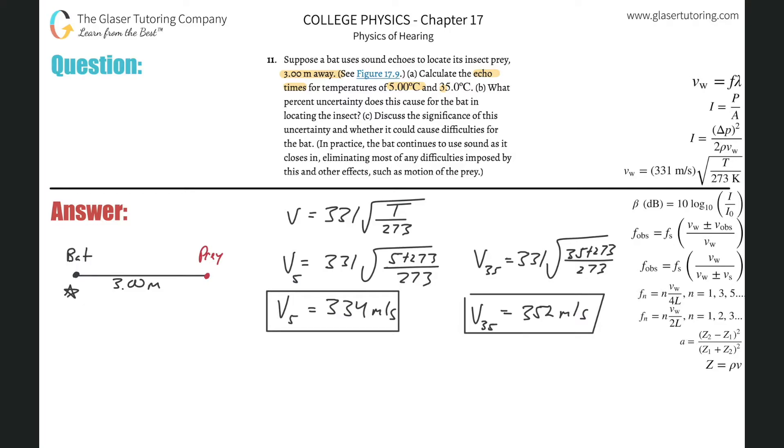So essentially what we could think about is if I want to find the time that it takes for the bat to fully send out its signal and then for that signal to return so that the bat registers it, I know that I have to be consistent and talk about the distance it covers during that time. So what's the distance it had to have covered going from the bat to the prey and from the prey to the bat? Six meters. So basically the velocity of the sound wave at 5 degrees Celsius would be equal to now the total distance from bat to prey and then the prey back to the bat.